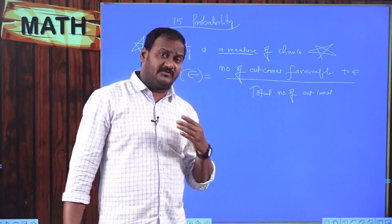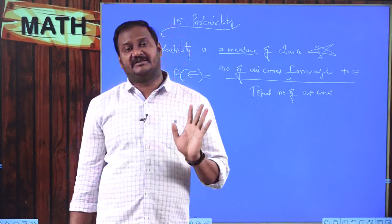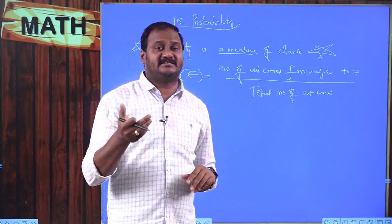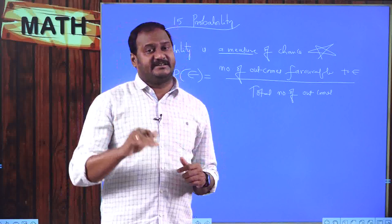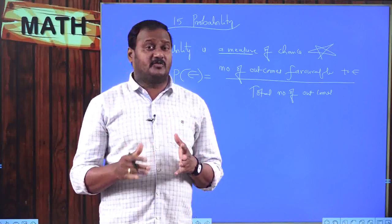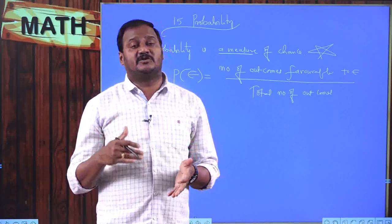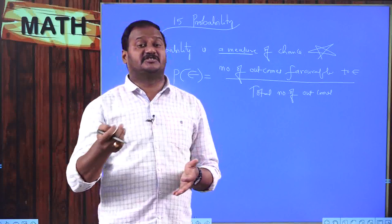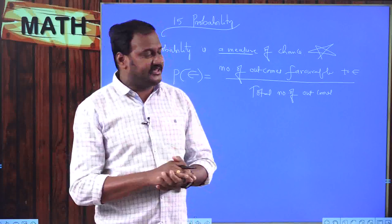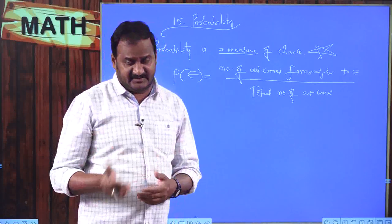Similarly, probability of not getting this event is also 50 percent, because when I am getting heads, it means I am not getting tails. Whatever the probability of getting an event is the same as probability of not getting an event when tossing a single coin. But that may not be same in other events.